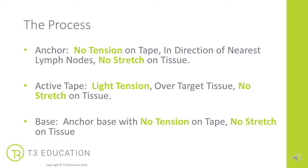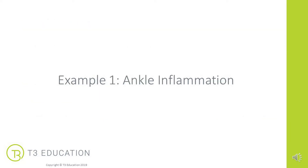We then add a light tension onto the tape, following the target tissue. We tend to use fan-cut tapes for this kind of lymphatic drainage because we want to cover a broader area. We don't want the tissue on stretch — we just want to create a continuous lift and recoil over that area over a period of time until the inflammation goes down. Then we simply anchor with no tension on the tape at all.